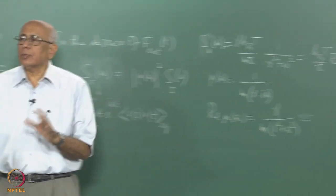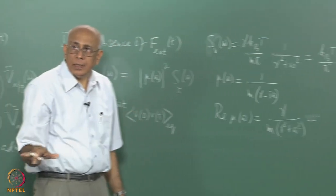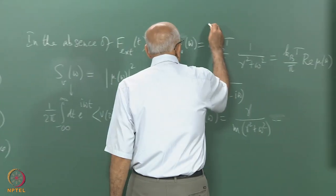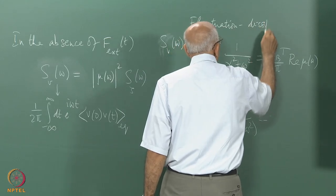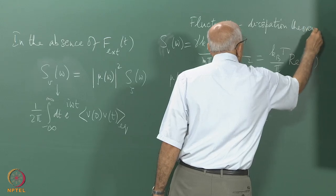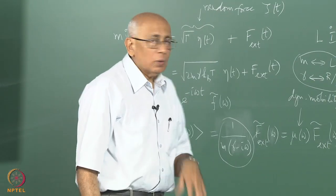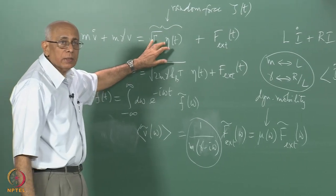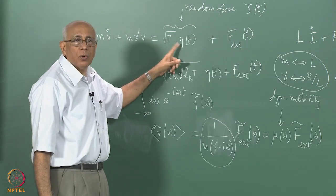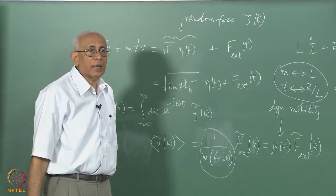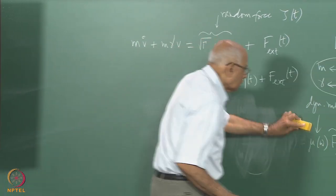There is one more way of writing this response-relaxation relationship: one side is a response and the other side gives the way the velocity correlations die out — it is a relaxation. This is called the fluctuation-dissipation theorem — actually called the first fluctuation-dissipation theorem, because there is also a second theorem relating the driving noise variable to the dissipation in the system.